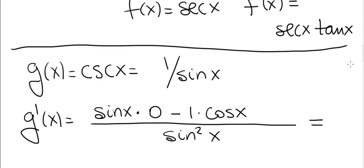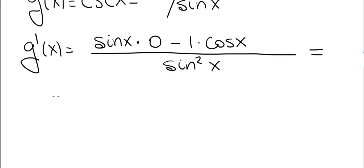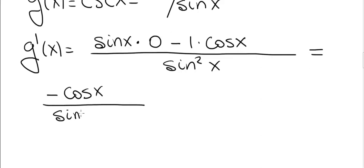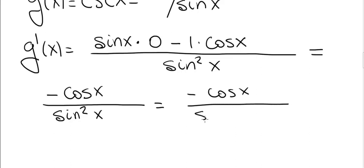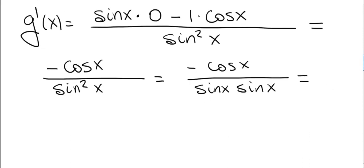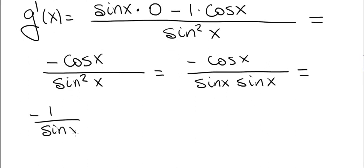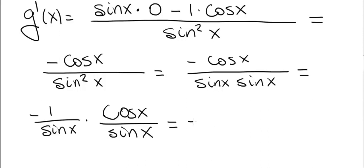We have to simplify this and express the derivative in standard form. The numerator is minus cosine x and the denominator is sine squared x. Let's write it as minus cosine x divided by sine x times sine x, and then express this as minus 1 divided by sine x times cosine x divided by sine x. Minus 1 over sine is minus cosecant of x, and cosine x over sine x is cotangent of x. That's the standard form of the derivative of the cosecant function.